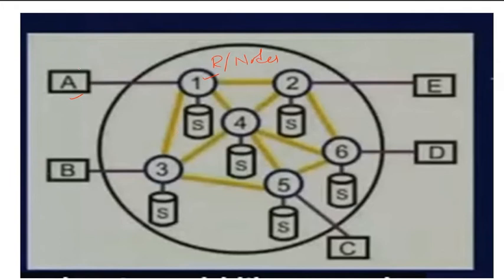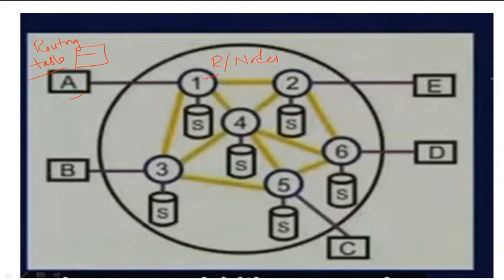Every host must maintain a routing table. If host A wants to send data to host E, the routing table defines the addresses of A and E — both physical and logical — and what is the next hop. For A, the next hop may be node 1; from node 1 the next hop may be node 2 or node 4; from node 4 the next hop may be node 2, and from node 2 to the destination.